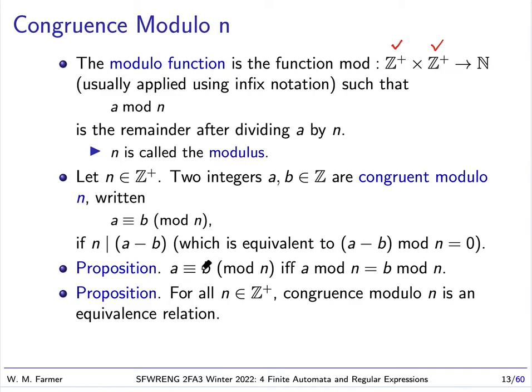There are two very simple propositions that come from this. a ≡ b (mod n) if and only if a mod n equals b mod n. Another simple proposition is that for all moduli n, the congruence modulo n is an equivalence relation. It's reflexive, symmetric, and transitive.